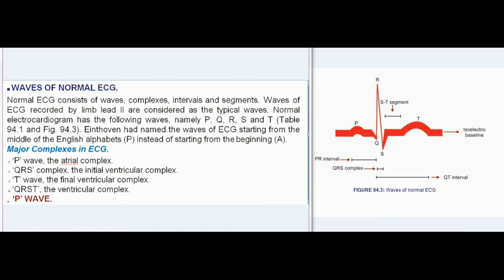Waves of Normal ECG: Normal ECG consists of waves, complexes, intervals, and segments. Waves of ECG recorded by Limb Lead II are considered the typical waves. Normal electrocardiogram has the following waves: P, Q, R, S, and T (Table 94.1 and Fig. 94.3).